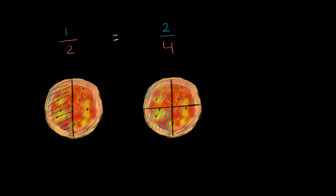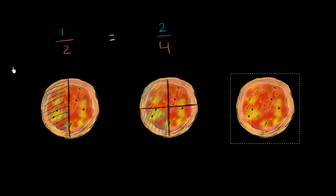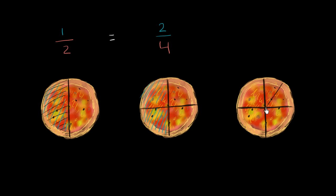Now let's do another one. Instead of dividing it into four equal pieces, let's divide it into eight equal pieces. We could cut once like this — now we have two equal pieces. Cut once like this — now we have four equal pieces. And then divide each of those four pieces into two pieces. So now how many equal pieces do I have? I have eight equal pieces.